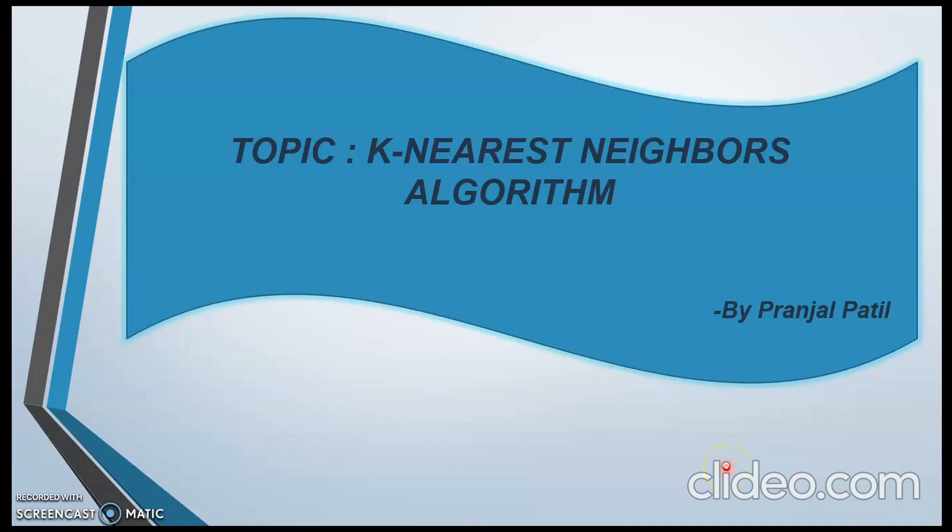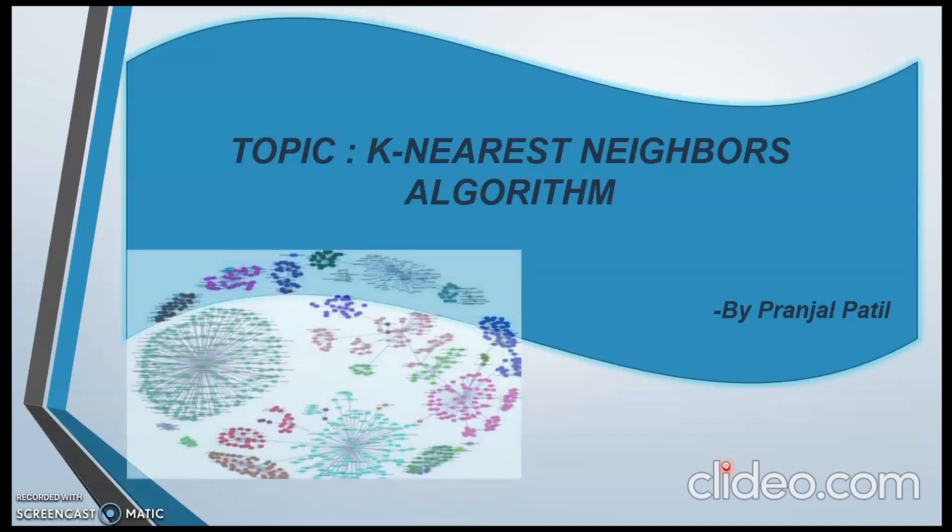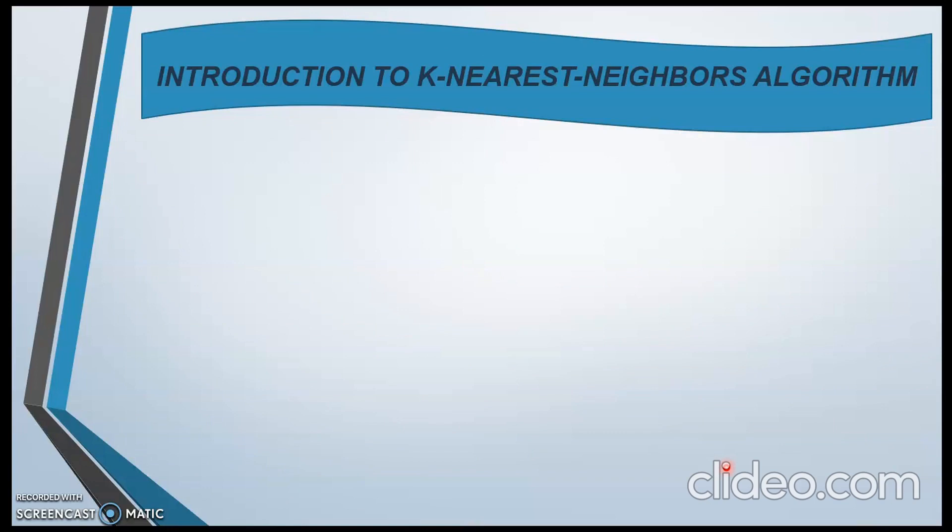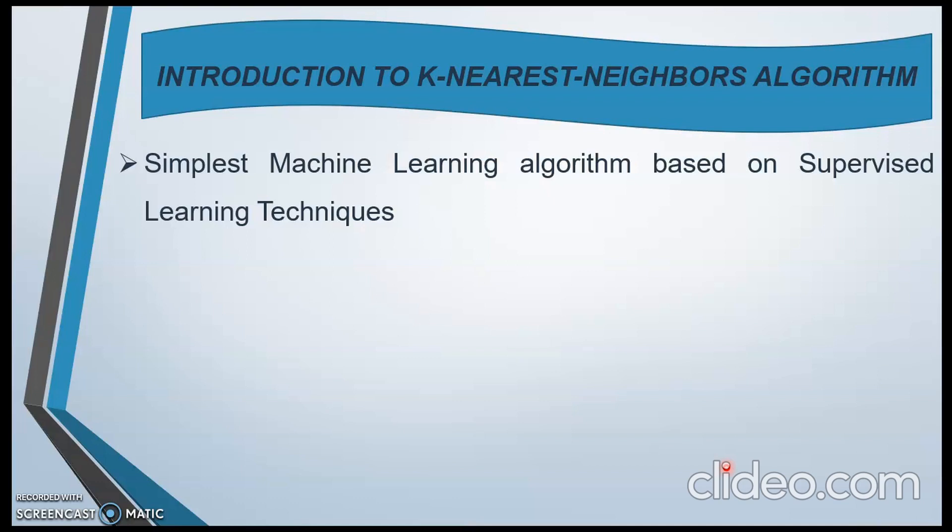Thank you Prachi. Hello everyone. Myself Pranjal Patil. Now we will see the k-nearest neighbors algorithm. In short, KNN algorithm. First we will see introduction of this algorithm. The KNN algorithm is the simplest machine learning algorithm based on supervised learning technique. What is supervised learning? Supervised learning technique means it is defined by its use of labeled dataset to train algorithms that classify data or predict outcomes accurately.